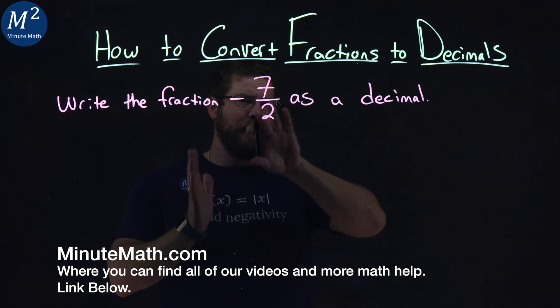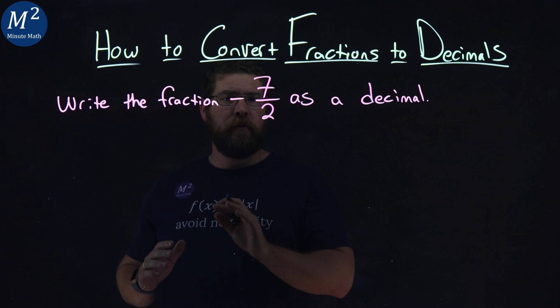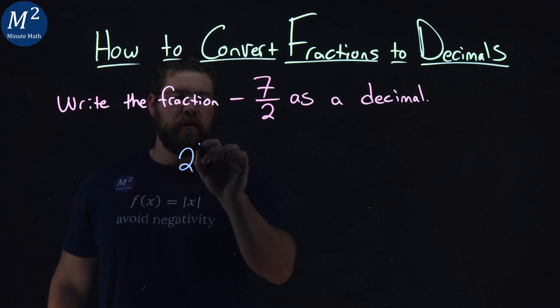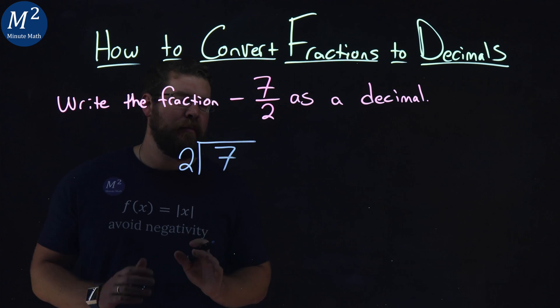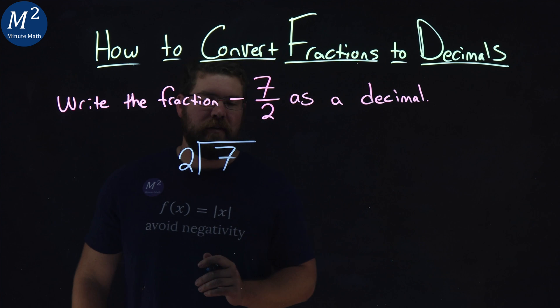We want to convert this to a long division problem. Now, I'm going to ignore the negative sign at first, but we'll make sure we add that in later. Start with 2 goes into 7. And I always imagine this is like the fraction tipping over, if that makes any sense to you.